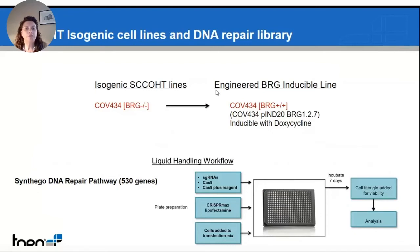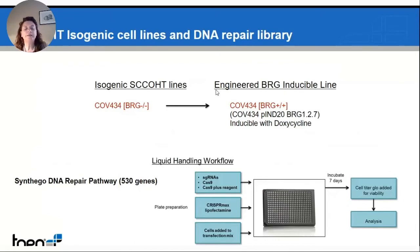For this, we generated isogenic SCCOHT cell lines and were able to re-express BRG1 in an inducible way. We used those lines to perform our screening using the DNA repair portion of the Syntego library. We transfected the cells with sgRNA and Cas9, and after 24 hours we started treatment with doxycycline to promote re-expression of BRG1. After approximately seven days, we evaluated the viability of the cells by performing the CellTiter-Glo assay. By comparing the viability of cells expressing BRG1 against cells not expressing BRG1, we were able to identify genes whose loss, together with BRG1 mutation, resulted in death of the cells. On the slide, you can see an example assay plate showing the ratio of viability between the two cell types — the majority of knocked-down genes showed no difference in viability between BRG1-expressing and non-expressing cells.